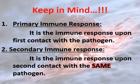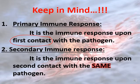The primary immune response is the immune response upon the first contact with the pathogen — whether it's bacteria, a virus, parasites, or whatever. The secondary immune response is the immune response upon the second contact with the same antigen or the same pathogen.